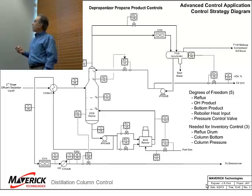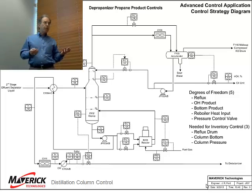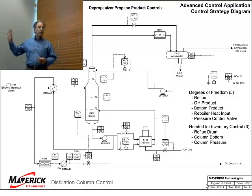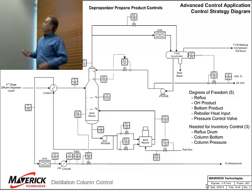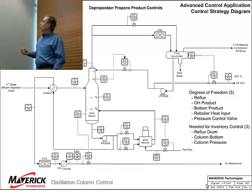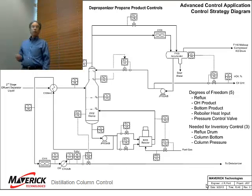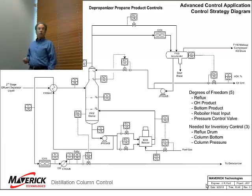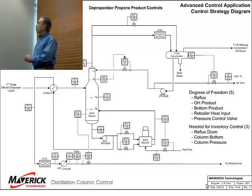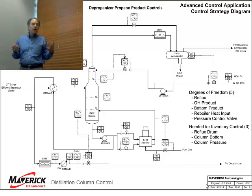Typically we talk about degrees of freedom, or independent variables, or manipulated variables. On a distillation column you'll typically have five: the reflux, overhead product, bottom product, the reboiler heat input, and some way to control the pressure. You need three of those for inventory control - you need to control the inventory in the reflux accumulator, the column bottom, and the pressure, which is really a kind of inventory.